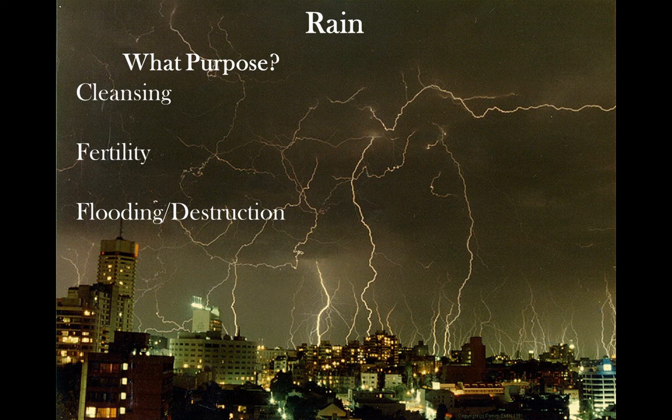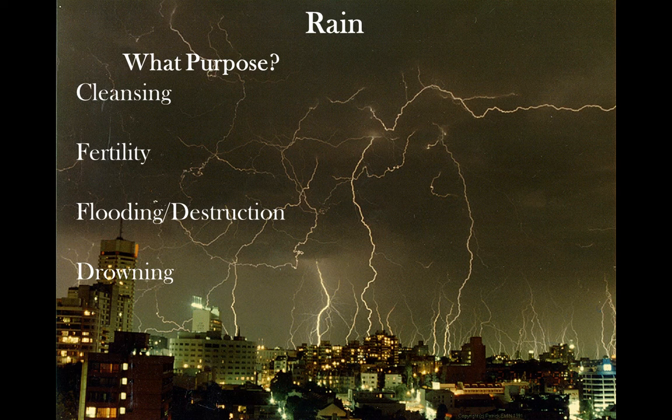But rain can also be negative. Rain can be flooding — it can be destructive and represent destruction. When it storms down and does serious harm, a hurricane is rain, and that can represent devastation or some unnatural force doing harm. Rain can also represent drowning, or lead to drowning, with that inundation of water into our lives.